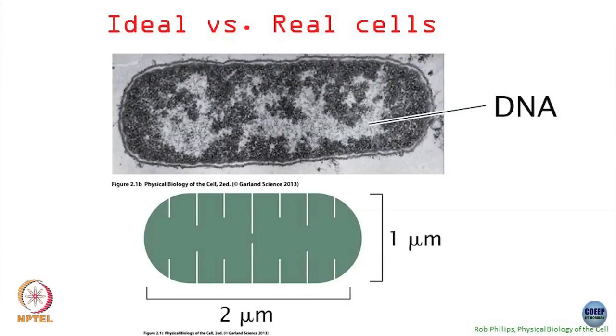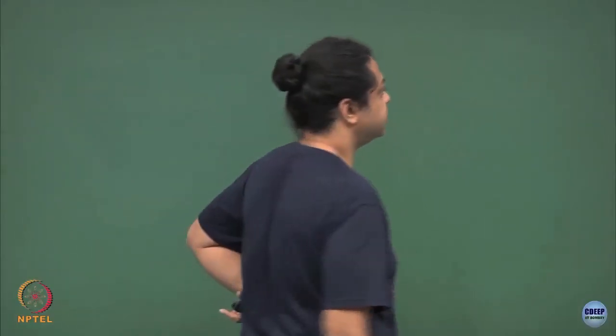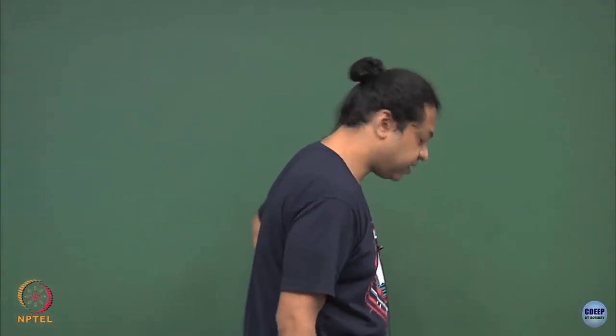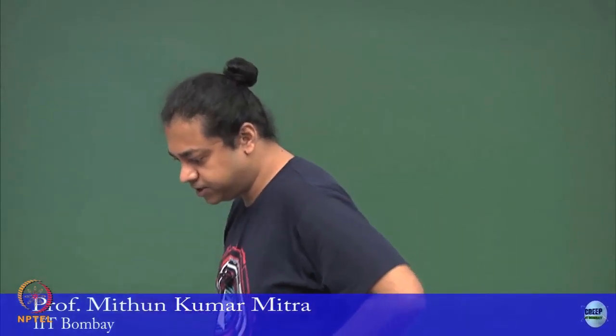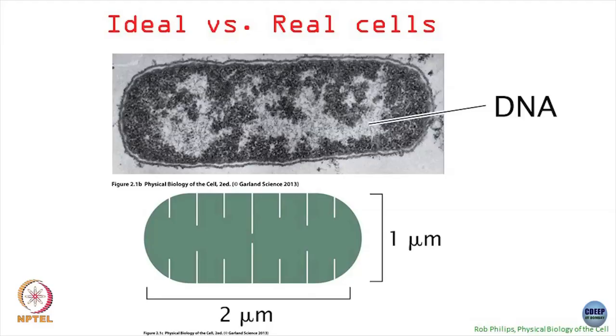Mostly when we have been doing these models, although in the initial part when we did numbers and scales we said that the cell is a very crowded environment and calculated some numbers of proteins and so on, we have mostly been disregarding that while doing the actual calculations. What I will try to do today is, at least in some cases, show what would be the effect if we actually took into account that the cell lives in this extremely crowded environment and what sort of things would change.